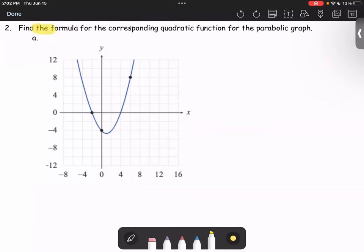In this example, we are going to find a formula for the corresponding quadratic function for the parabolic graph. The graph opens upward, which tells us that a is going to be positive.